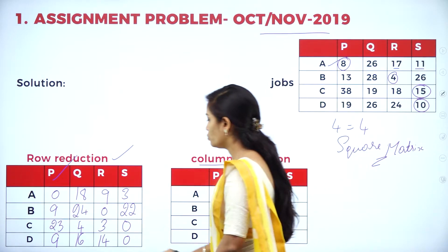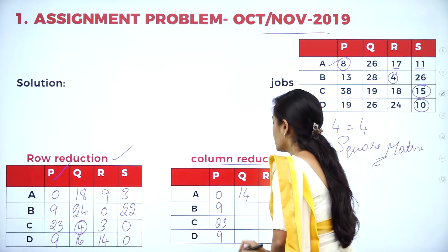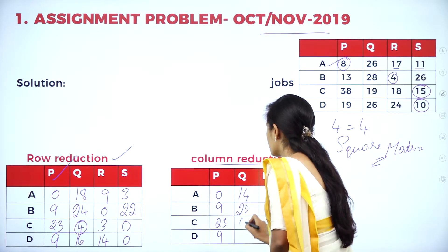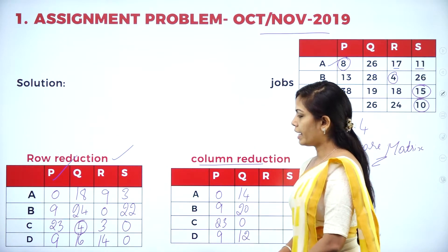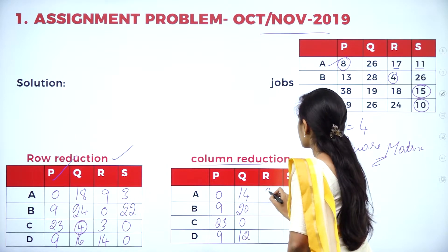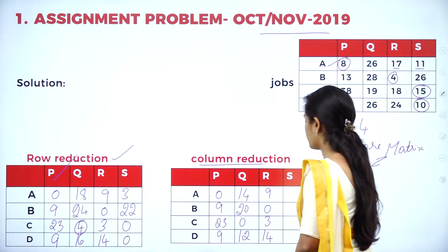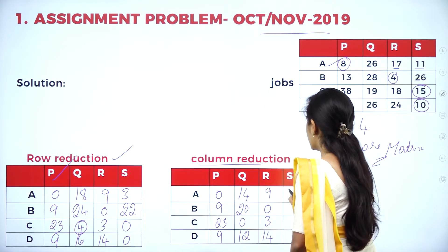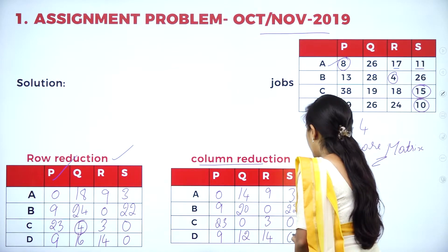In the second column, the least value is 4. So 18 minus 4 is 14; 24 minus 4 is 20; 4 minus 4 is 0; 16 minus 4 is 12. In the third column, the least value is 0, giving values: 9, 0, 3, 14. In the last column, the least value is 0, giving the same values: 3, 22, 0, and 0.